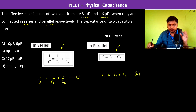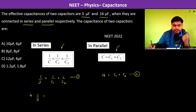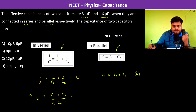Both c1 and c2 are in microfarads, so we have neglected the 10 to the power minus 6 term. Now solving: 1/3 = (c1 + c2) / (c1 · c2). Since c1 + c2 = 16, we get 1/3 = 16 / (c1 · c2), and therefore c1 · c2 = 48.